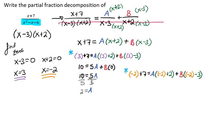So we plug in our negative 2 to all the places that we have the x. And that gives us negative 2 plus 7 equals a times the quantity negative 2 plus 2 plus b times the quantity negative 2 minus 3.